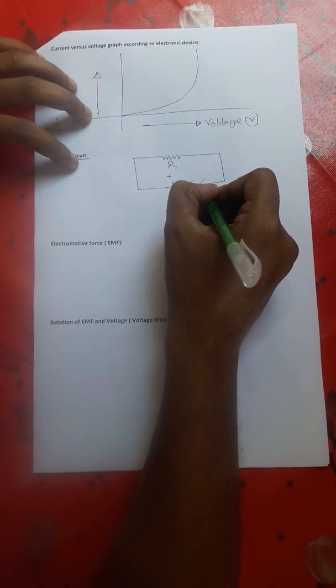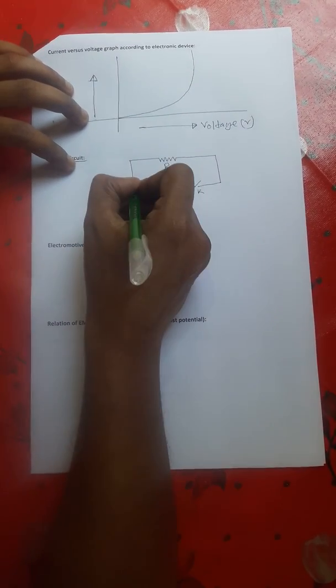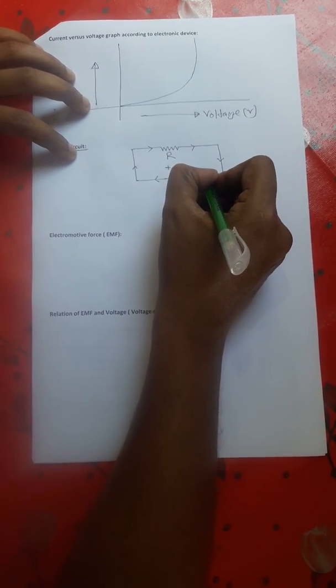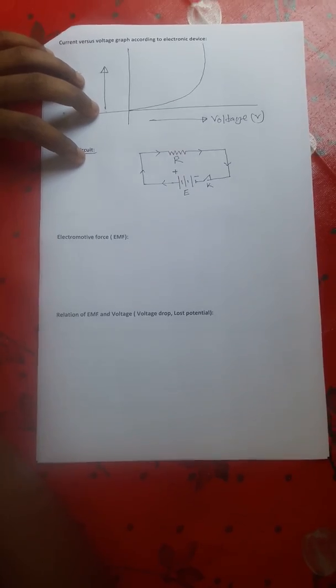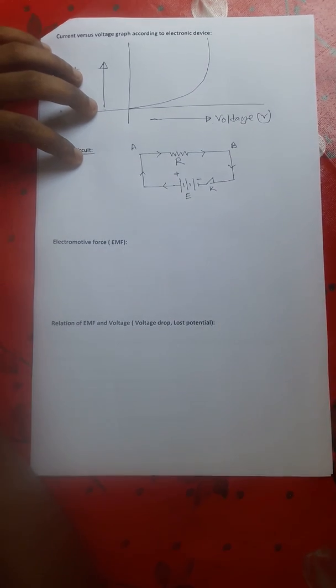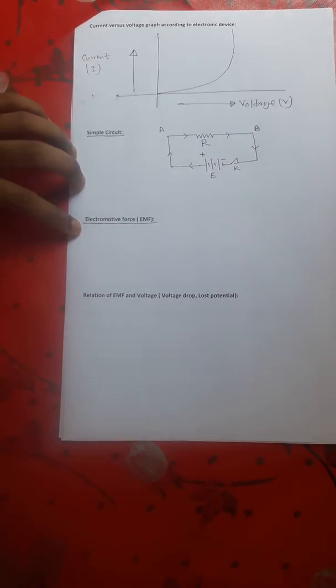This circuit can run by using electricity and has a switch or key K. The positive terminal supplies electricity through a resistance. When the switch is connected, from point A to point B, this complete path is known as a simple electric circuit.